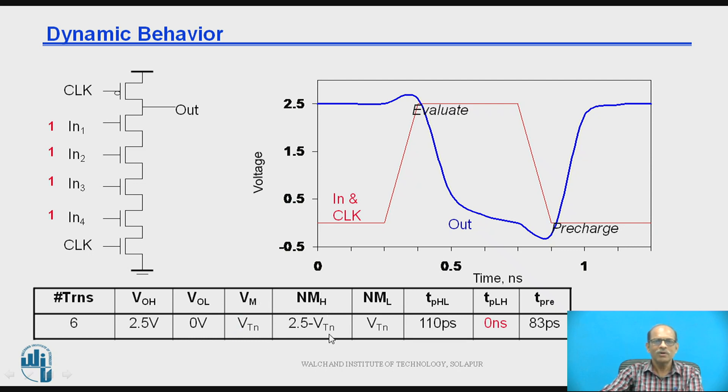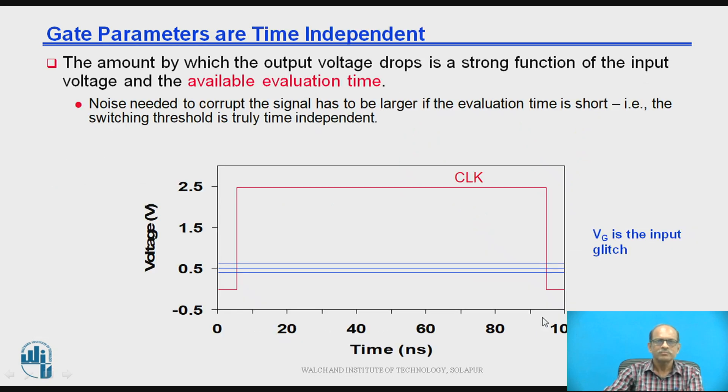Switching threshold is VTN, NMH is 2.5 minus VTN, NML is VTN, TPHL 110 picosecond, TPLH is 0 and this is TPRE. Now gate parameters are time independent as shown by this waveform.